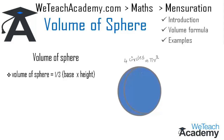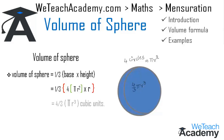So substituting into the formula, we get one-third into four times πr² into the height, which is the radius r. Multiplying all the terms, we get the volume as four-thirds πr³ cubic units — this is the formula to find the volume of a sphere.